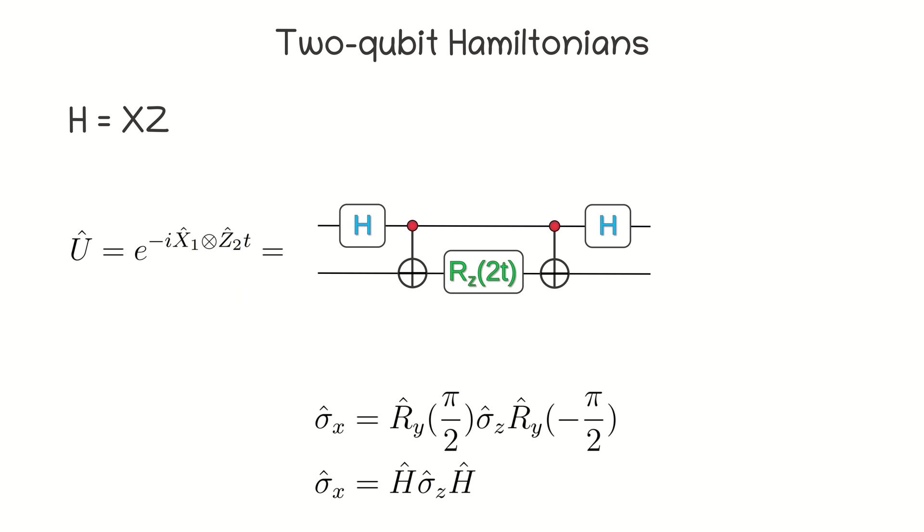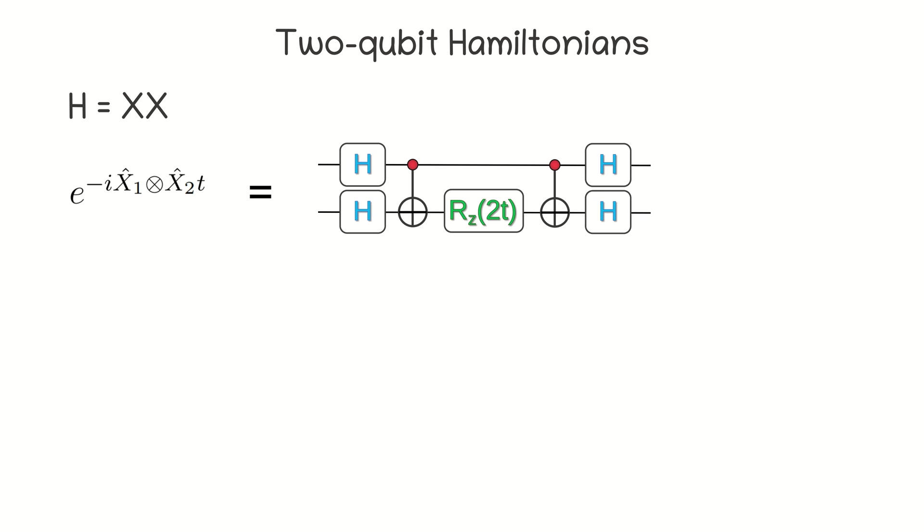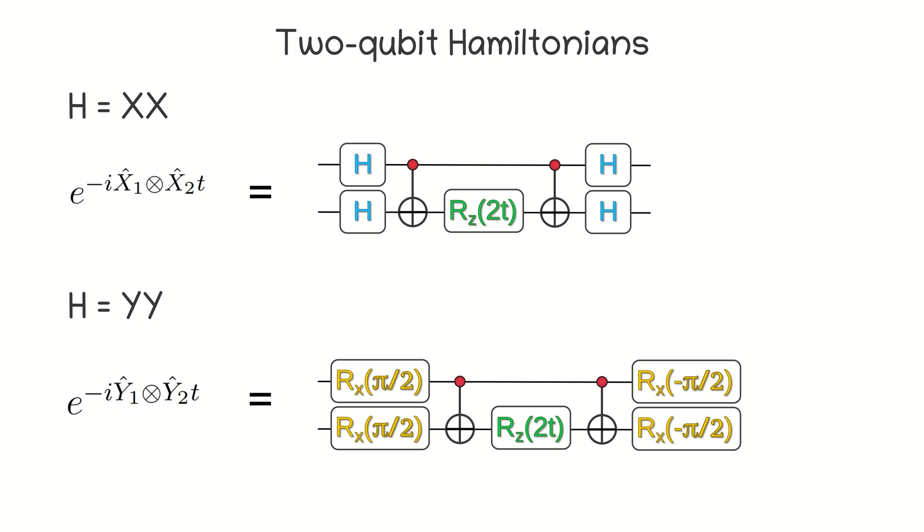So, to construct a corresponding quantum circuit, it is enough just to apply Hadamard or Ry gates to the first qubit on both sides of the quantum circuit for the Rzz operator. It is easy to show that the same approach works for any position of the X or Y operators in the Hamiltonian. Therefore, to simulate the evolution under XX Hamiltonian, we just apply Hadamard gates on both sides of Rzz operator. And for YY Hamiltonian, we wrap everything into Rx gates.